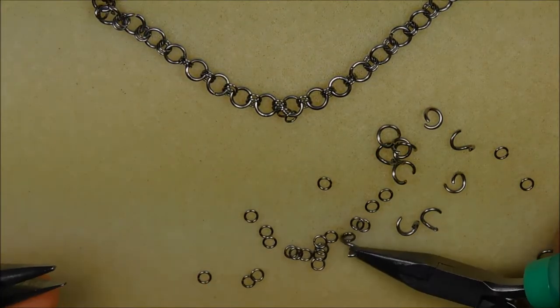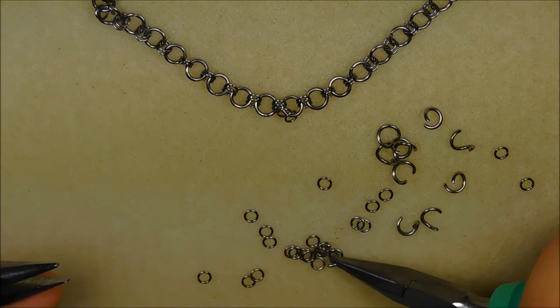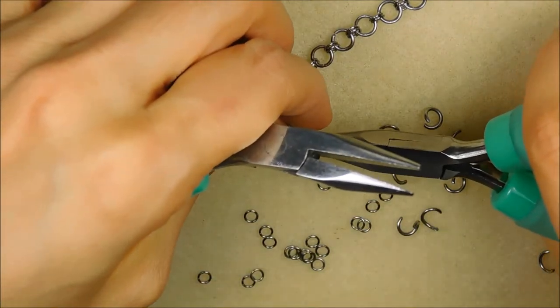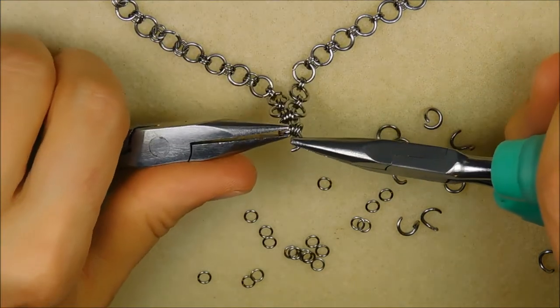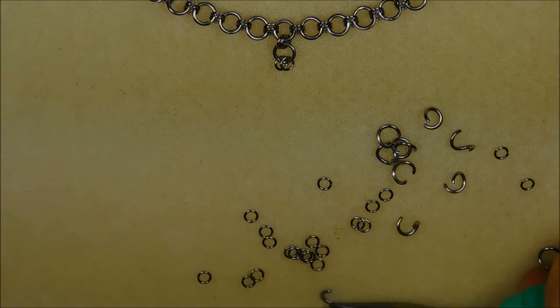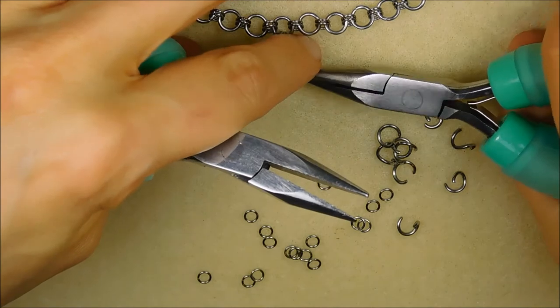Pick up two four millimeter rings with an open six millimeter ring. Before closing, run the open ring through the two most recently added rings, then close. Repeat these steps until your component is three and a half inches long. This will be a one-two-one chain with 25 segments.